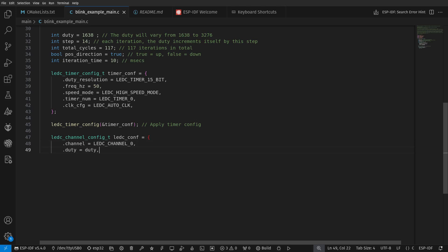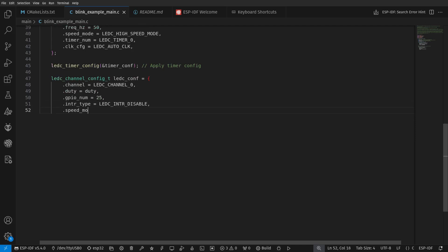We then configure our channel to use GPIO25, with interrupts disabled and the duty to be our initial duty. The timer and the speed mode we use must be the same as the timer configuration. Our while true loop is where our duty is updated.